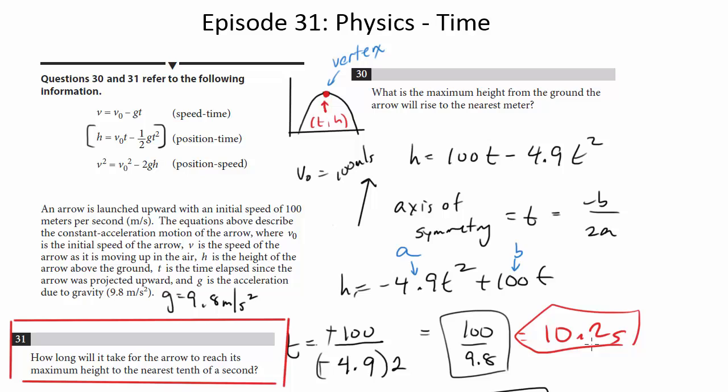So as I said in episode 30, this is a way to approach the question where you don't need any physics knowledge. There is a way to approach this with physics. For example, you might know if you've taken physics that at the maximum height, the velocity is zero. The object stops temporarily at that split second at the maximum height, so that it can then turn around and go in the other direction.